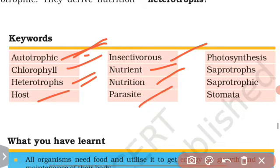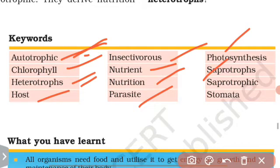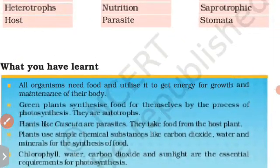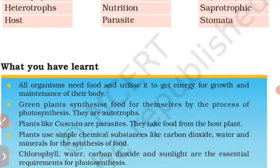Parasites depend on other plants or animals for food. Photosynthesis is the process by which food is prepared and oxygen is produced. Saprotrophic nutrition involves organisms feeding on dead matter. Stomata absorb carbon dioxide, and transpiration releases excess water from the plant.